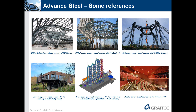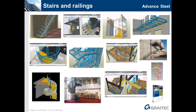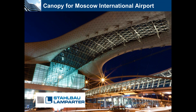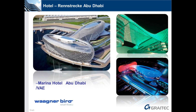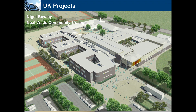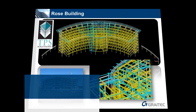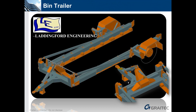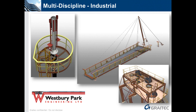Advanced Steel has been used for all sorts of prestigious global projects of all natures and all sizes and scales — smaller projects with architectural detailing as well as massive projects like the canopy at Moscow airport or the canopy over the Abu Dhabi Formula 1 hotel. In the UK our customers cover the full range from simple canopies up to full industrial complexes, superstores and residential buildings, and even more unusual uses such as producing a trailer.